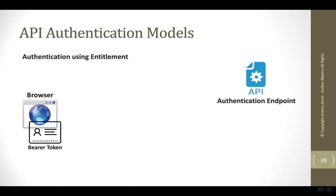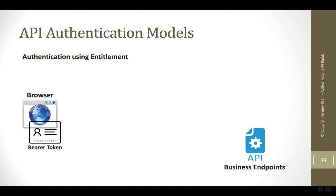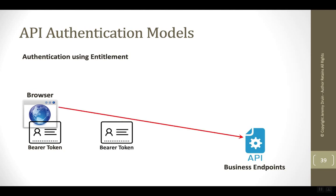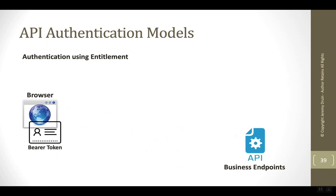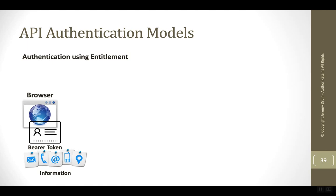So there's no need for backend session management. Whenever the client wants to access the business endpoint, it passes the bearer token — again, not giving up its credentials. The business endpoint can read the bearer token, pull out the claims or permissions, and know what the user has access to. The big difference in this model is the client is carrying around their permission slip with them, whereas in the refresh token / access token model, the server was keeping track of session state and permissions. The business endpoint can then return the information back to the browser.